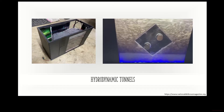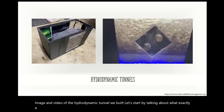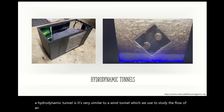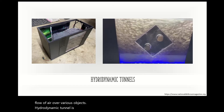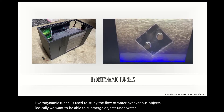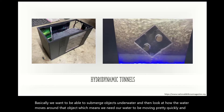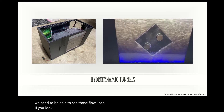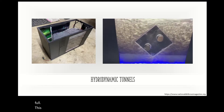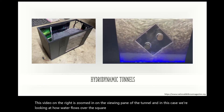Here is an image and video of the hydrodynamic tunnel we built. A hydrodynamic tunnel is very similar to a wind tunnel, which we use to study the flow of air over various objects. A hydrodynamic tunnel is used to study the flow of water over various objects. Basically, we want to be able to submerge objects underwater and look at how the water moves around that object, which means we need our water to be moving pretty quickly and we need to be able to see those flow lines. You can see what our hydrodynamic tunnel looks like in full, and the video on the right is zoomed in on the viewing pane of the tunnel — in this case we're looking at how water flows over a square shape, which we can move around using magnets.